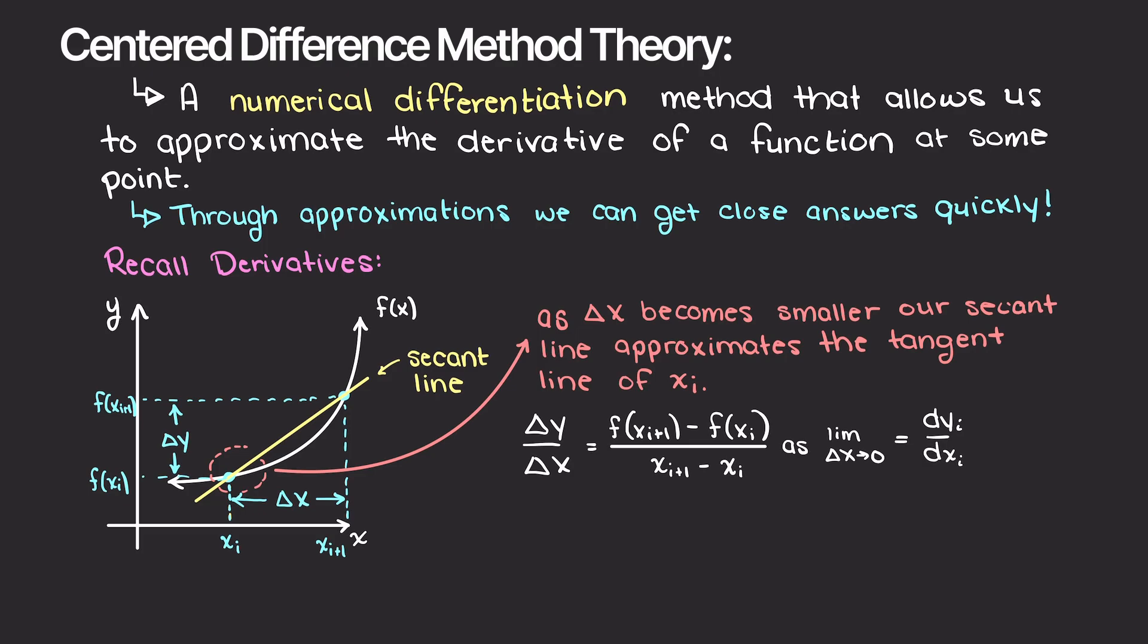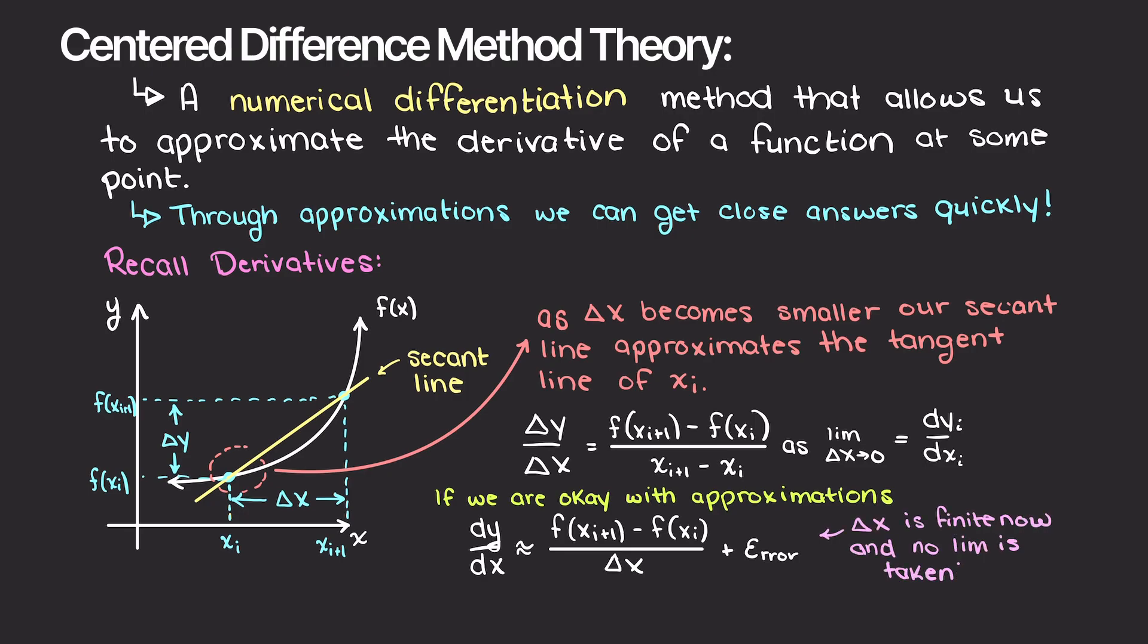Well, how does that help us understand numerical differentiation? If we are okay with good approximations of what this derivative is, and not exactly as we could in an analytical sense, we can say that the derivative at point x is roughly the change in our function across a very small change in x. Thereby, assuming a finite small change in x, we can make our lives much easier and solve much more complicated problems by giving up some accuracy.